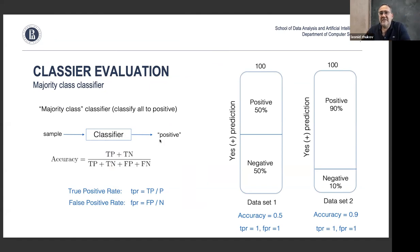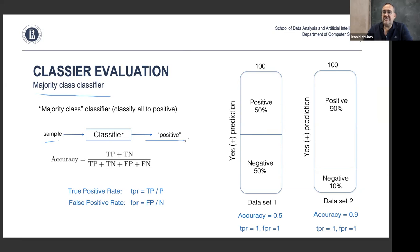Quite often when people talk about accuracy they don't actually mean the definition of accuracy, because accuracy by itself is really not very useful. Consider the majority class classifier — an extremely simple classifier that always classifies every data point as positive, regardless of its features.